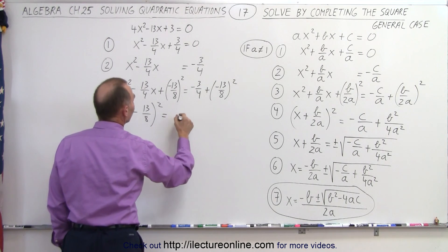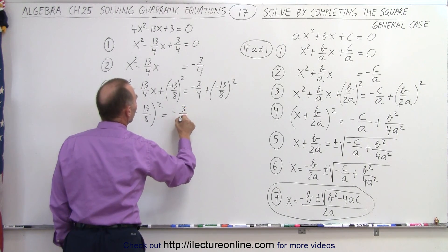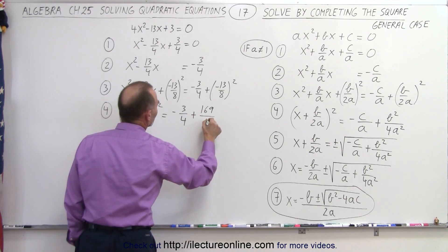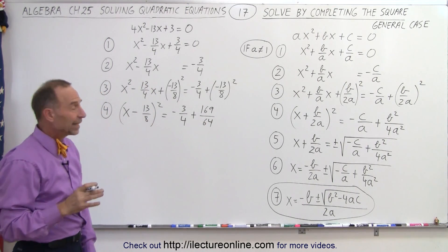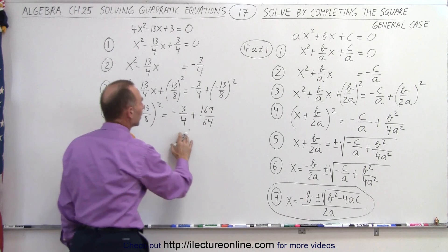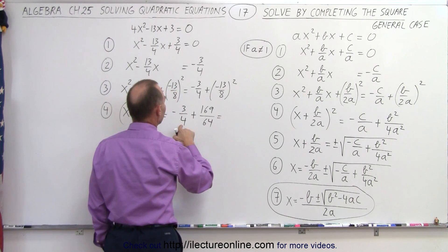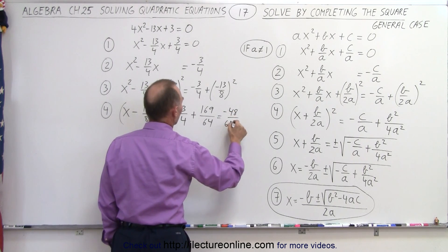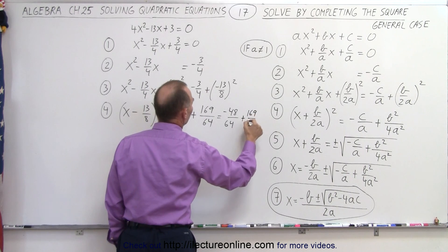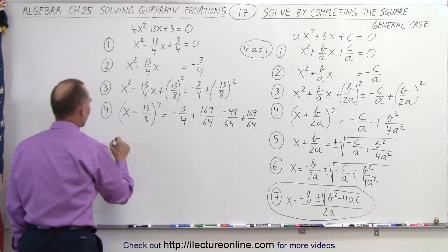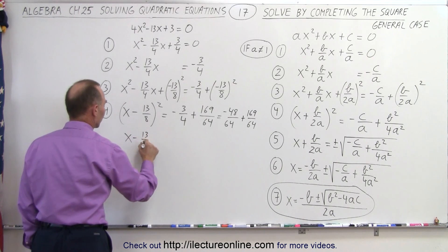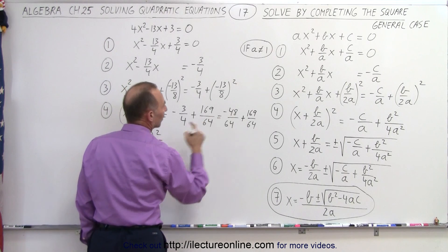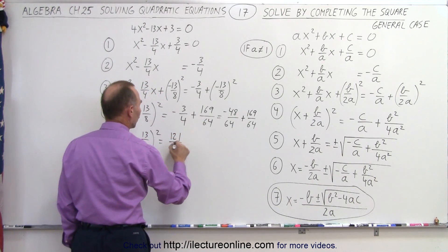And that would be equal to the right side, which is -3/4 plus 13 squared, which is 169, divided by 8 squared, which is 64. So notice that we need to clean up the right side a little bit. We need to write that over a common denominator, so this can be written as -48/64 + 169/64. So when we do that, we get (x - 13/8)² is equal to -48 added to that, which gives us 121/64.